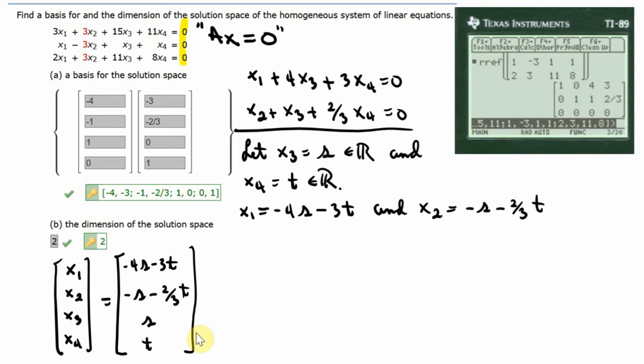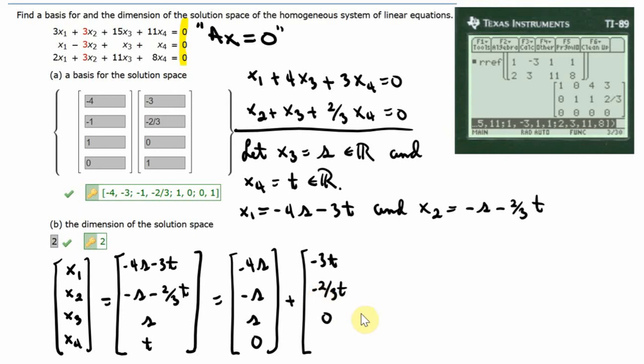We'll write the S's together: negative 4S, negative S, S, and 0. Then plus the T's: negative 3T, negative two-thirds T, 0, and T. We'll write it one more time.